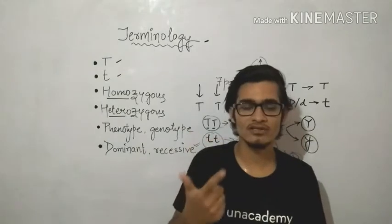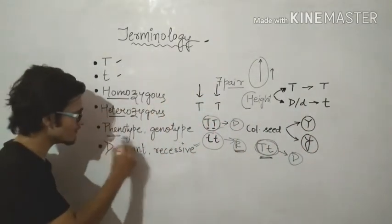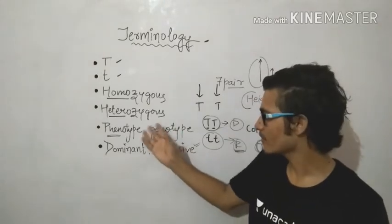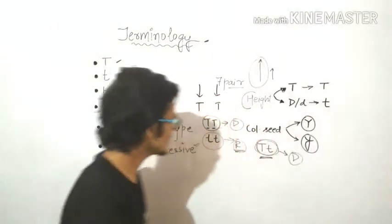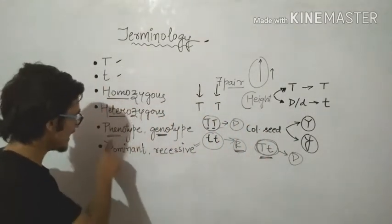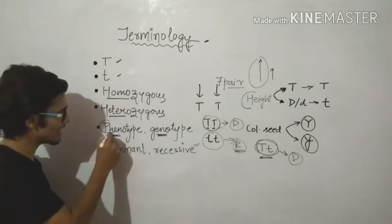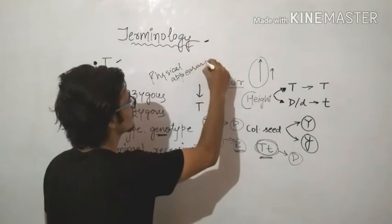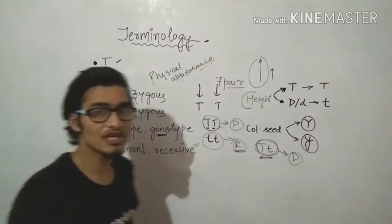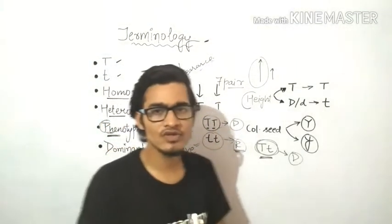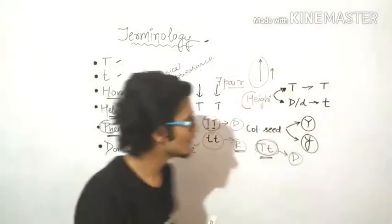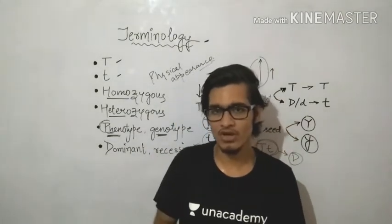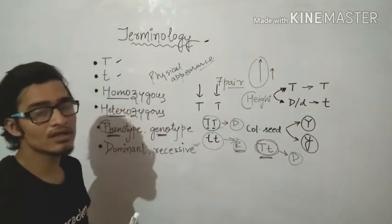In the heterozygous condition, the one that expresses itself is dominant and the one that does not express is recessive. Now, phenotype and genotype — the name tells about itself. Geno means genetic material, related to the genetic component. Pheno simply means physical appearance. Phenotype is related to the physical appearance of the plant, which we can observe from the outside — for example, tallness. If you look at a tall plant, you can indicate that yes, its phenotype is tall.